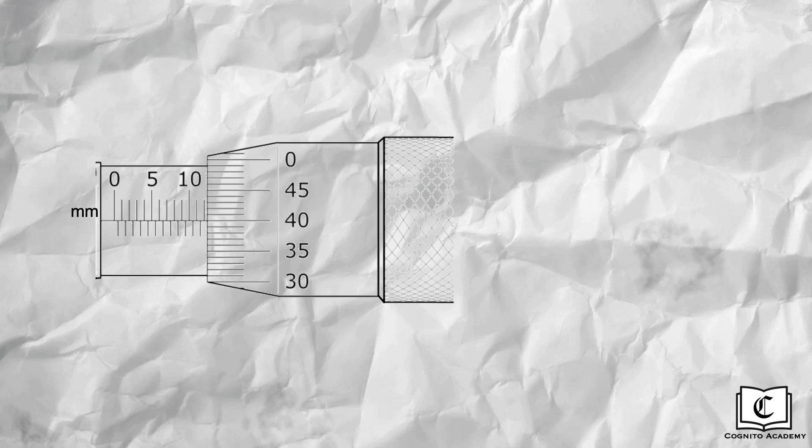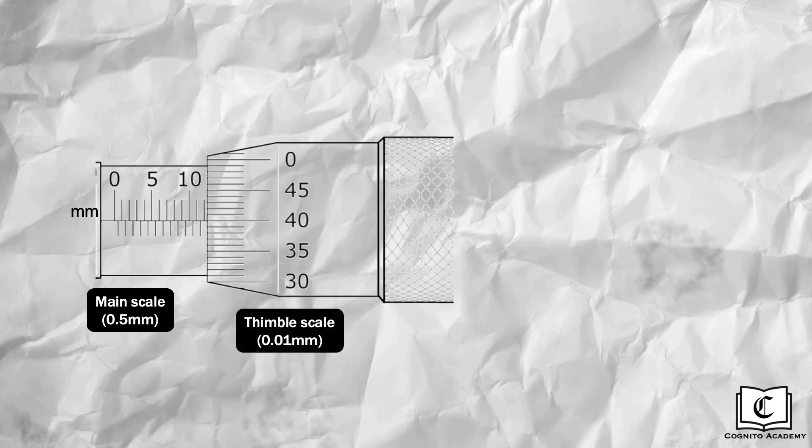Let's go in-depth into how to take a reading from the micrometer screw gauge. Like the vernier caliper, we need to take note of the smallest division of both scales and record to that smallest division. The main scale measures to 0.5 mm, while the smaller timbre scale measures to 0.01 mm.